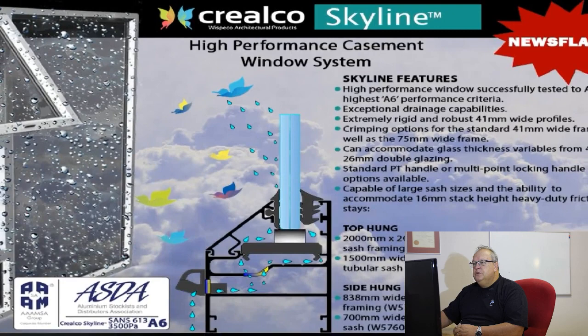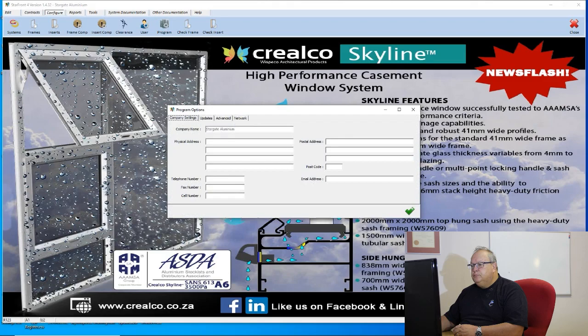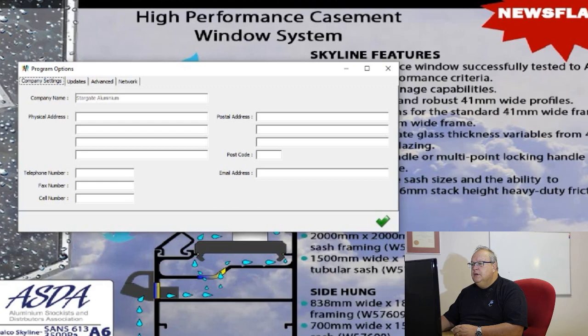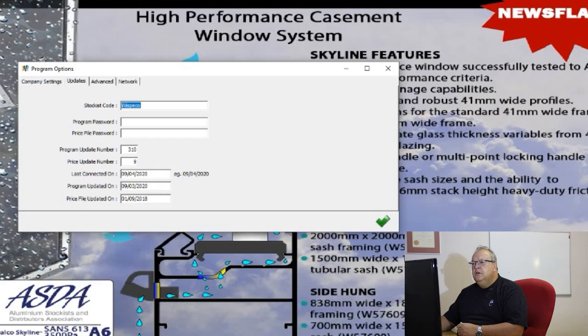The next box is our program configuration. Under company settings I can set the company name, physical address, postal address, postal code, telephone number, fax number, cell number, and email address — the contact details of your own business. On the update screen you can specify who your stockist is, which automatically associates with that stockist logo. If necessary you can set a program and price file password — some stockists have specialized price lists available on Starfront and will give you a password.